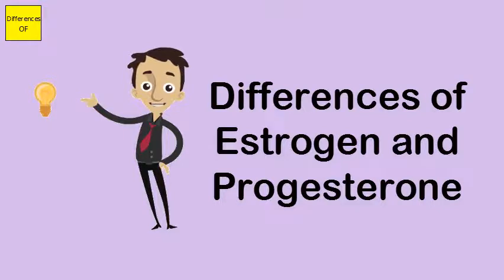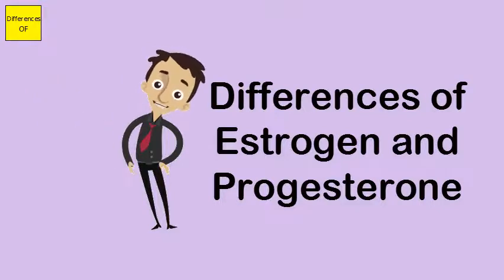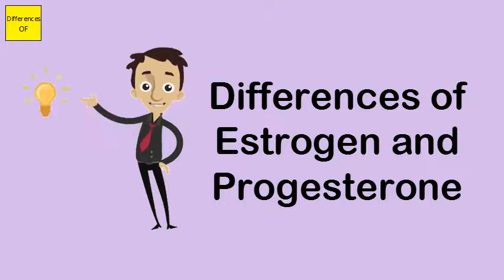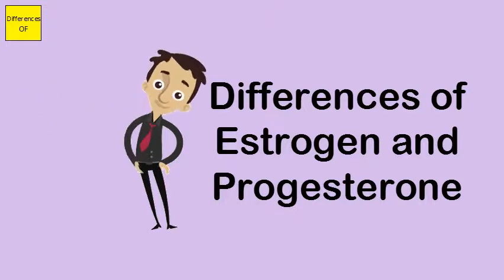Estrogen controls the formation and maintenance of secondary sex characters, whereas progesterone controls the growth and maintenance of the endometrium of the uterus.